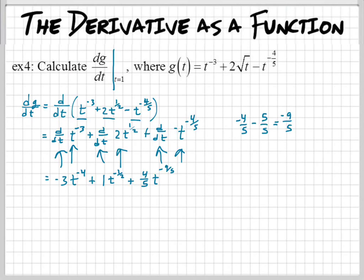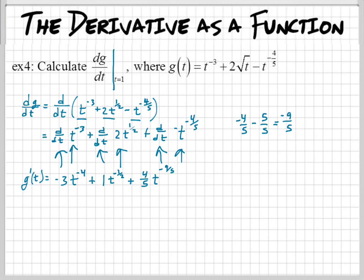Now let's see if we can manipulate this to make it look a little nicer. Technically, you're done with the derivative — this is dg over dt. For those who prefer prime notation, this would be g prime of t. Both are exactly the same, just different ways to write it, and they both serve different purposes. We can write negative 3 t to the negative 4 as negative 3 over t to the fourth, and 1 times t to the negative 1/2 as 1 over the square root of t, plus 4/5 t to the 9/5.